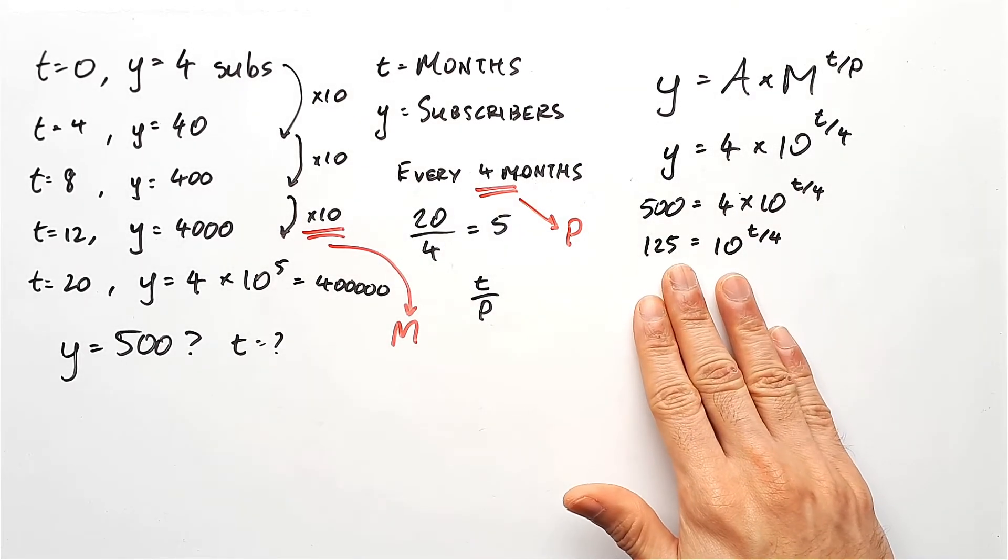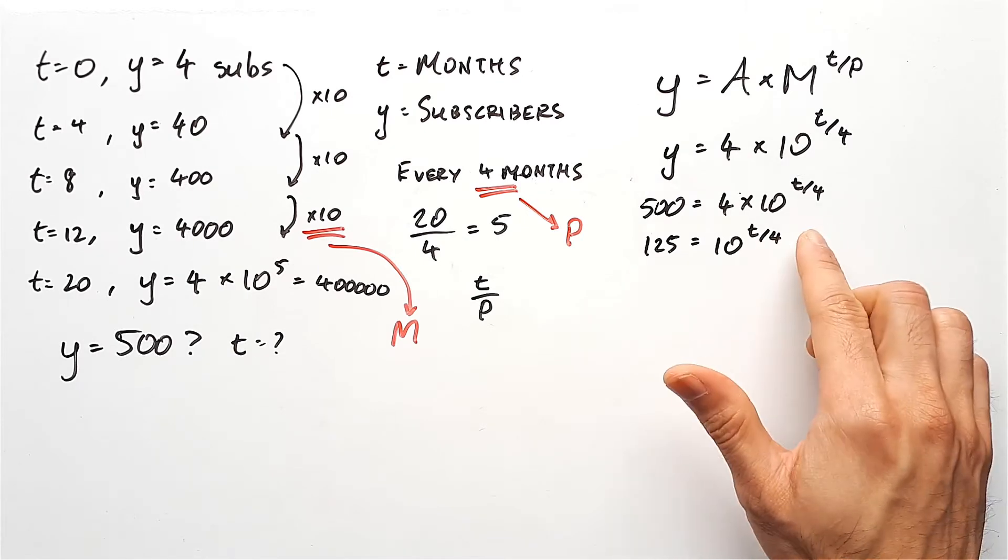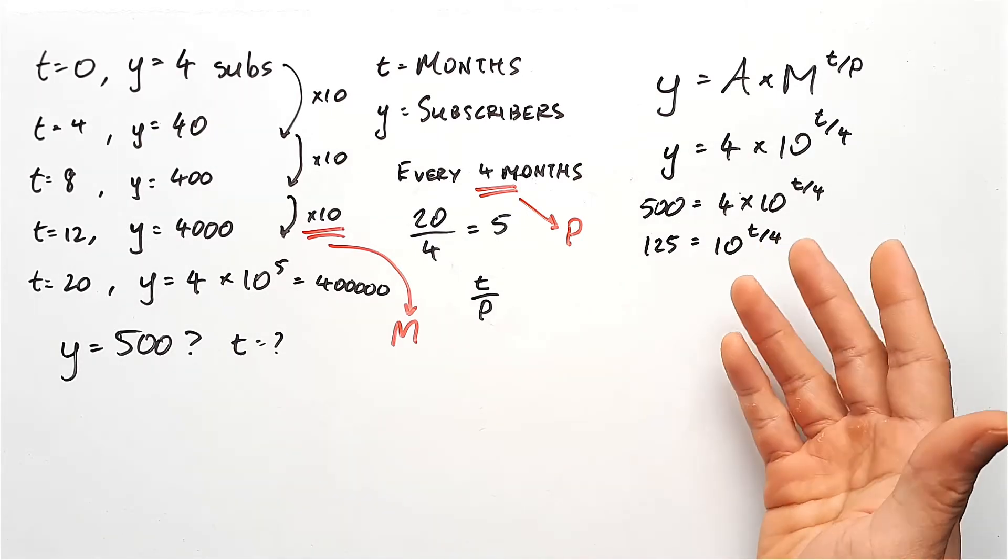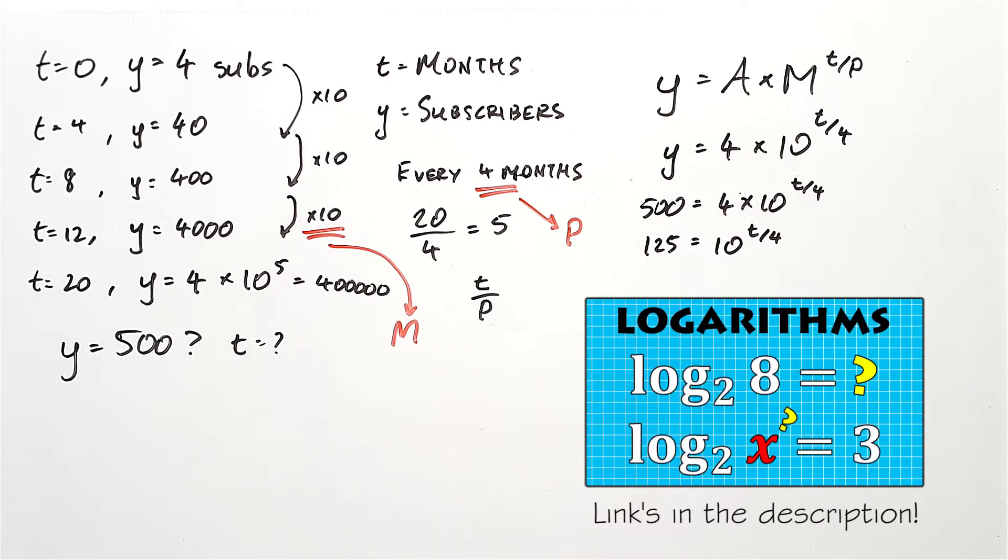Right now we have an exponential equation because it's involving an exponent or a power t over 4. We need to convert this into a log equation. So if you don't know how to do that, check out my video on log laws. Since the base is 10, we can convert this and say log base 10 of 125 should equal t over 4.